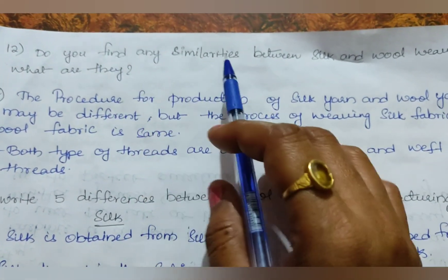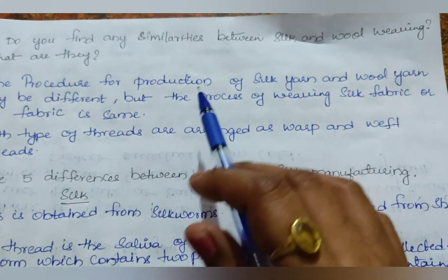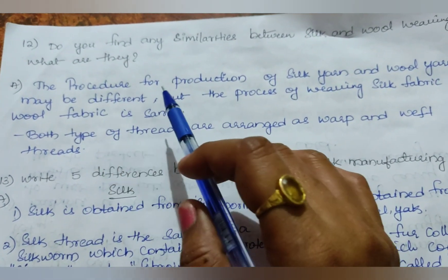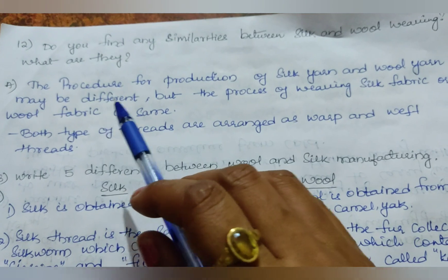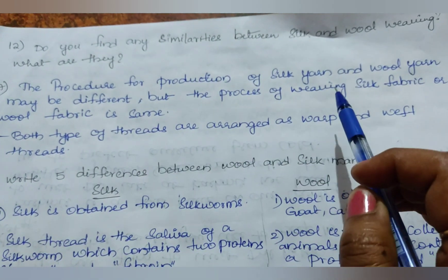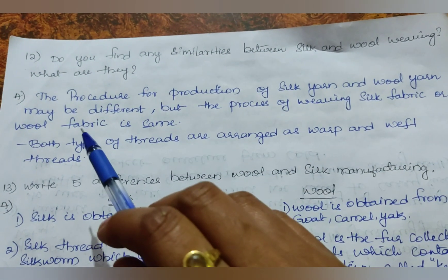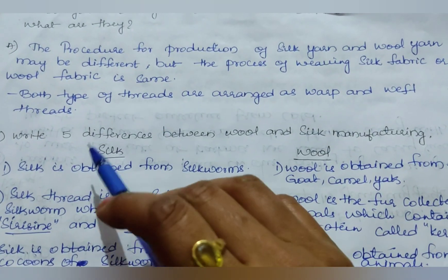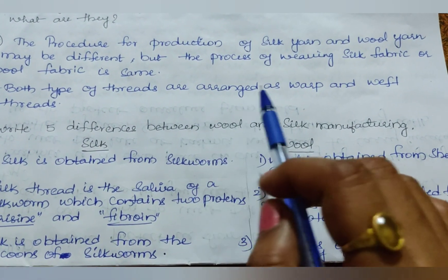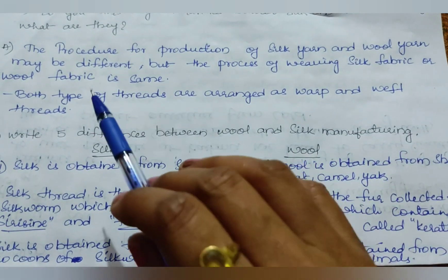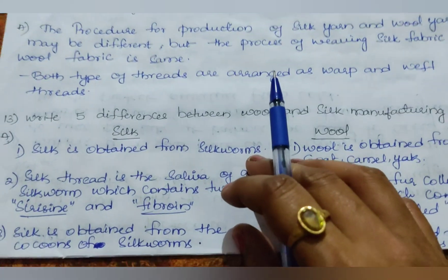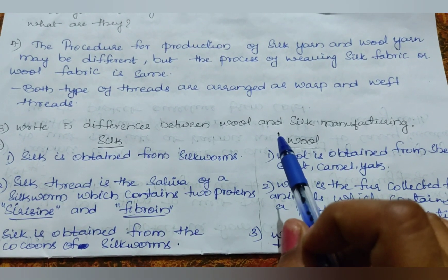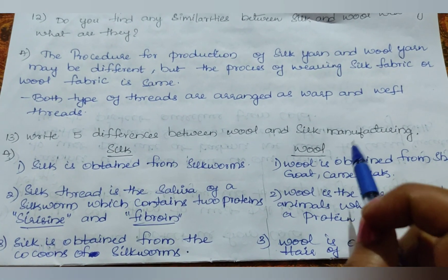Twelfth question: Do you find any similarities between silk and wool weaving? What are they? The procedure for production of silk yarn and wool yarn may be different, but the process of weaving silk fabric or wool fabric is the same. Both types of threads are arranged as warp and weft threads.